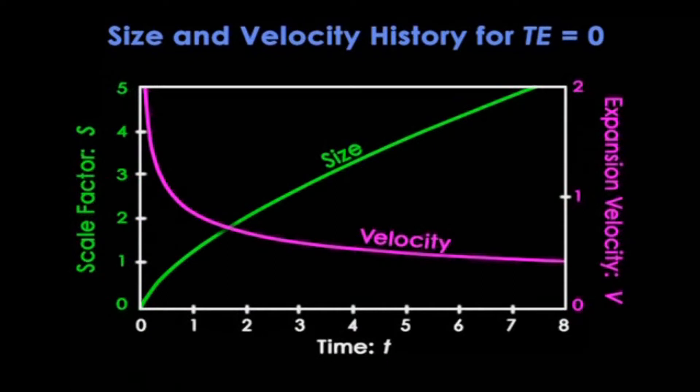Notice the x-axis is now time. The purple line goes with the right-hand y-axis and shows the rock's velocity. It drops as time passes, as you'd expect. The green line goes with the left-hand y-axis and shows the rock's size. It increases as time passes again, just as you'd expect.